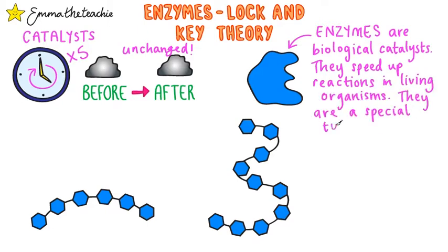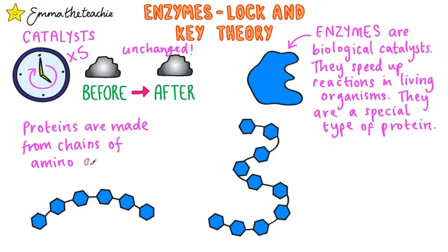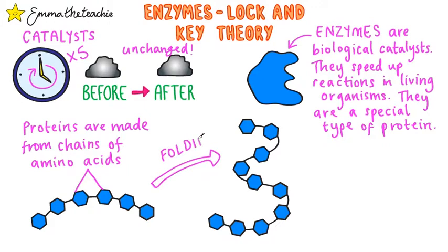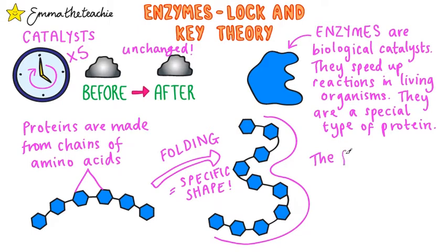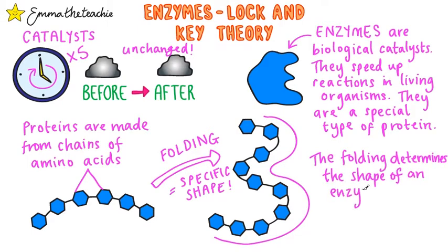They're actually just a special type of protein. All proteins are made from chains of amino acids — small organic molecules. The folding of the amino acid chains is what gives a protein its specific shape and structure. In enzymes this folding is particularly important, as it determines the shape of the enzyme's active site.